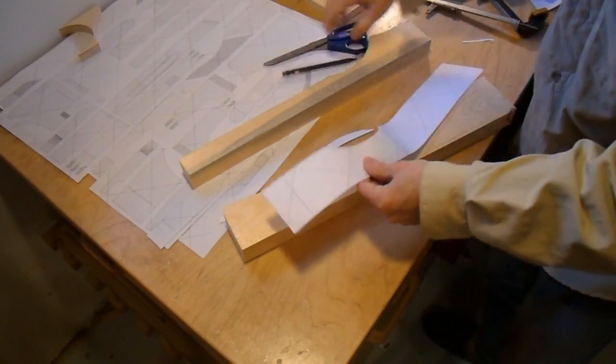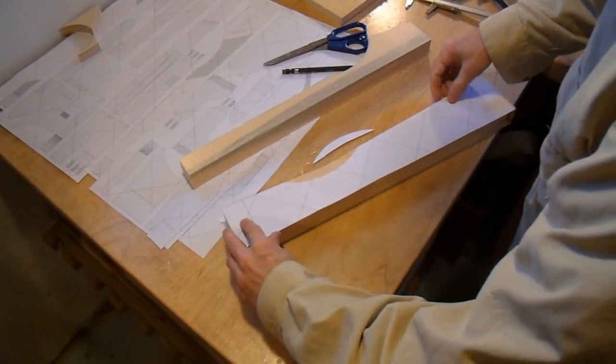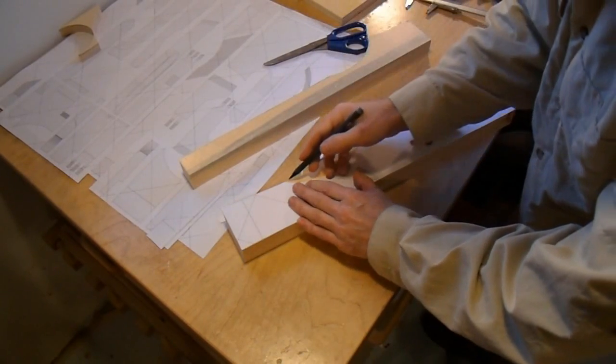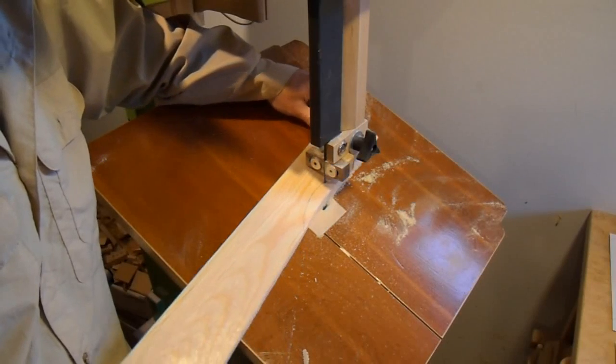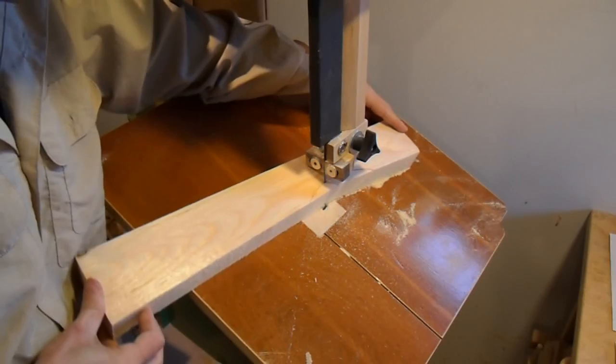Part of those pieces have a bevel cut to them, so I need to mark that separately for cutting it out. And with the bandsaw table set at an angle, cutting out that bevel.